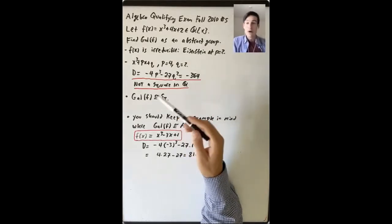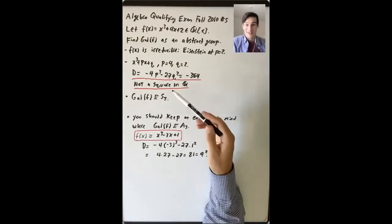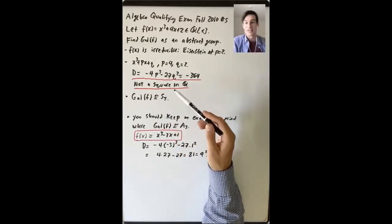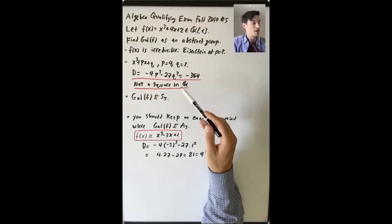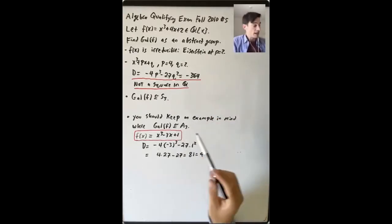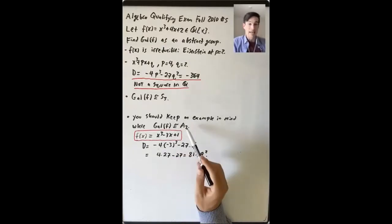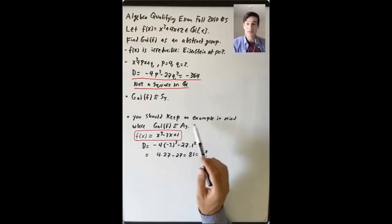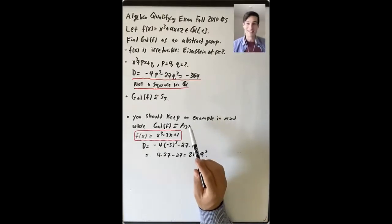Using what we've developed here, computing the Galois group of a cubic polynomial given as x³ + px + q comes down just to computing the discriminant and checking whether or not it's a square. Most of the time, most cubics have Galois group isomorphic to S₃. There is some precise sense in which that is true that I don't want to get into here. But you should have an example in mind where the Galois group actually is isomorphic to A₃ — an irreducible cubic where the discriminant is a square in Q.